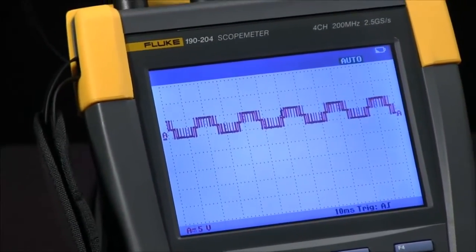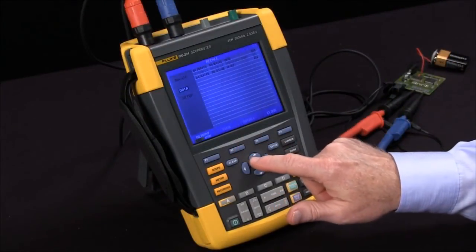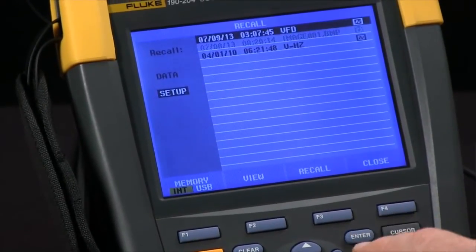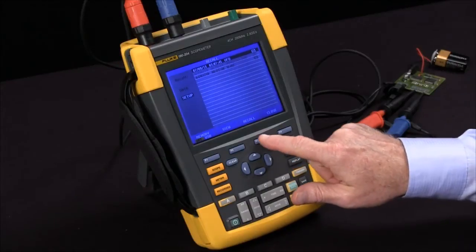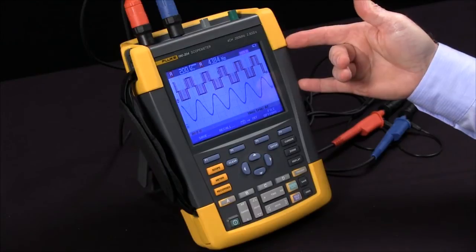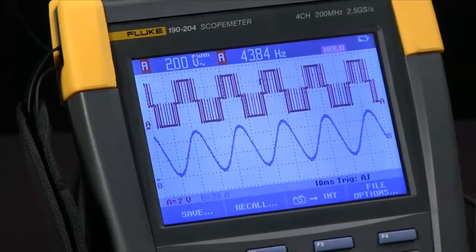Now I'll hit the save key again, F2 for recall. I want to recall the setup, so I'll arrow down, hit Enter. VFD is highlighted, so I'll press F3 for recall, and I'm right back to where I was. My pulse width modulated voltage and my frequency for channel B.